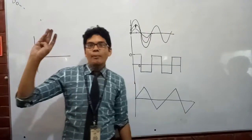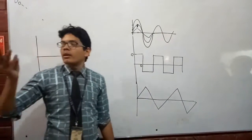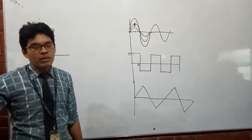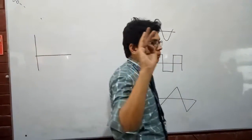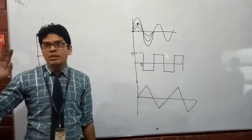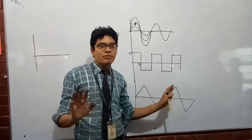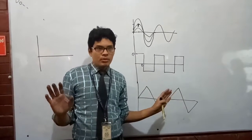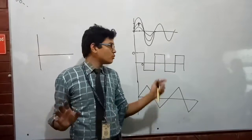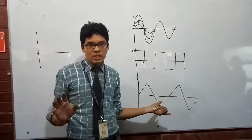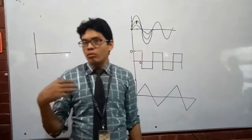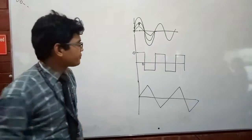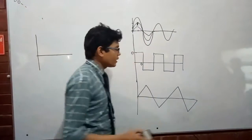The next four to five experiments will be based on the rectifier, half-wave, filtering, clipping, clamping, and amplification. These six experiments will be based on all this information I'm giving you, so this is important. Today I'm giving you an idea and showing you the wave shapes, and if possible we will do one complete experiment.